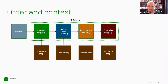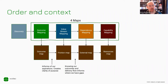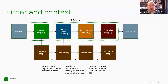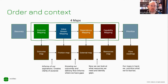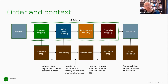These maps feed each other. The outcome map informs our aspirations, creating clarity of purpose. The friction map improves our understanding of delivery flow and identifies where we have gaps. The capability map helps us identify what resources we need. All of this gives us a number of activities we can prioritize, standardize, and build into a flow roadmap — a model for where we want to go, what we want to tackle first, what are the first outcomes we want to target, and what we need in order to achieve this.